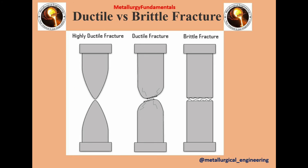Here you see the difference between ductile and brittle fracture. The first figure shows highly ductile fracture, the second shows moderate ductile fracture, and the last shows brittle fracture. The main difference is that brittle fractures occur with no apparent deformation before fracture, while ductile fractures occur when visible deformation does occur before separation.